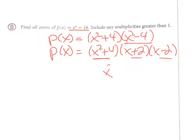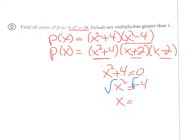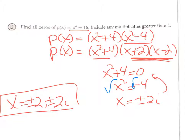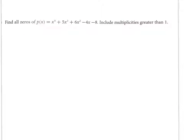Solving x² + 4 = 0: move the 4 over to get x² = −4, then take the square root. Since it's negative, you get an i: x = ± 2i. So my four zeros are ±2 and ±2i. Complex numbers are fine here.